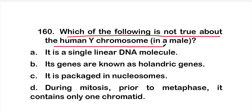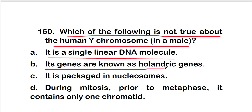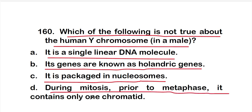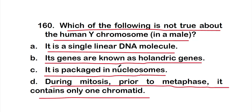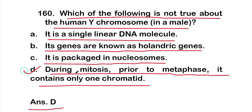Question 160: Which of the following is NOT true about the human Y chromosome in a male? Options: A — it is a single linear DNA molecule; B — its genes are known as holandric genes; C — it is packaged into nucleosomes; D — during mitosis, prior to metaphase, it contains only one chromatid. The correct answer is option D — this statement is not true. These are all 20 questions of Part 8 on MCQs on Mendelian genetics. Thank you for watching.